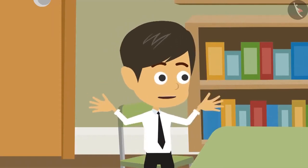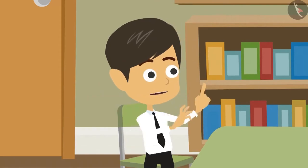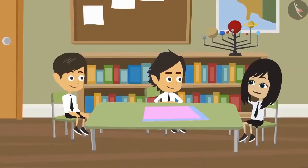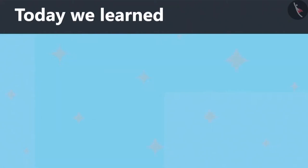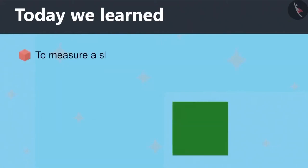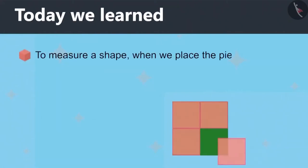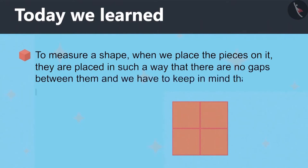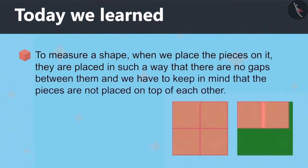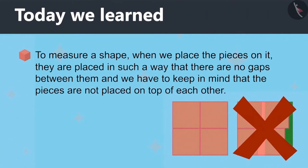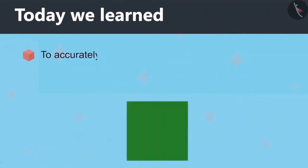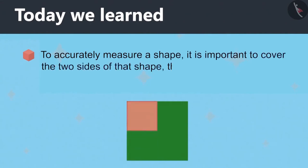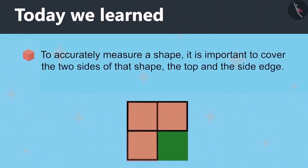Today we learned that when placing pieces on a shape to measure it, there should be no gaps between them and they must not be placed on top of each other. And to accurately measure a shape, it is important to cover the two sides: the top and the side edge.